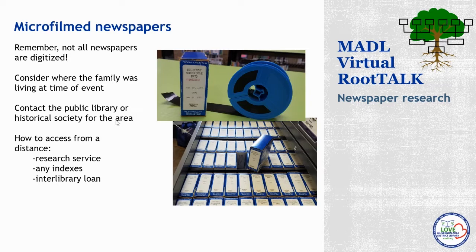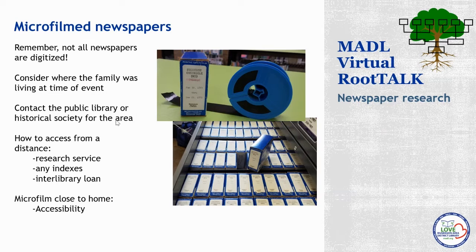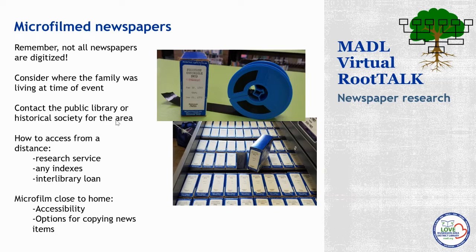When you find out your hometown newspaper is archived at a local public library or historical society, you'll want to find out how to get a chance to look at the microfilm — are there certain hours it's available, can you drop in or do you need an appointment? Also ask about how you can save news items: can you print from the microfilm reader or is scanning available? Here at Norton Shores Branch, the microfilm reader printer scanner allows you to print an image on paper or scan an image as a JPEG or PDF and save it to a USB drive, or save it to the desktop and email it to yourself.